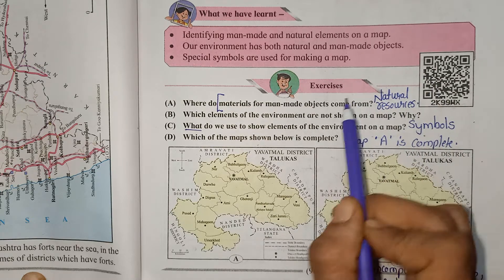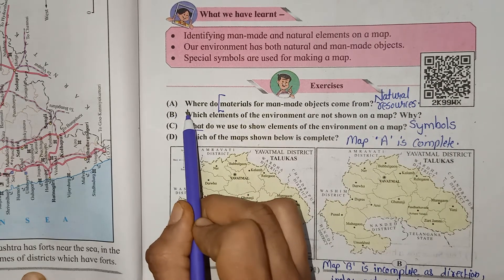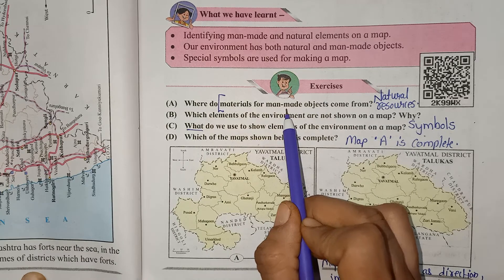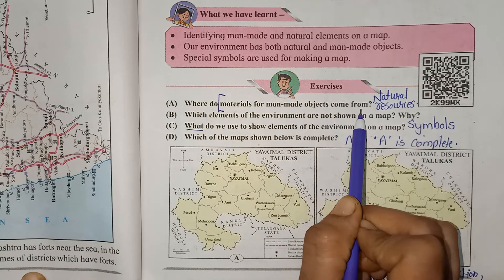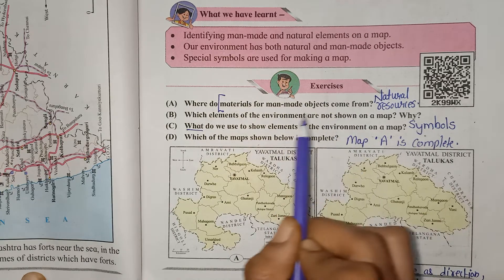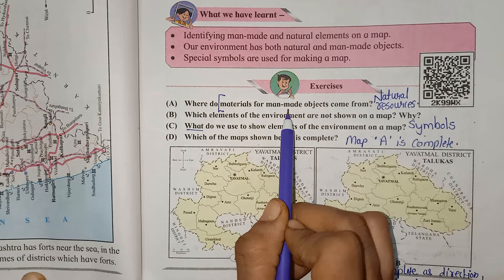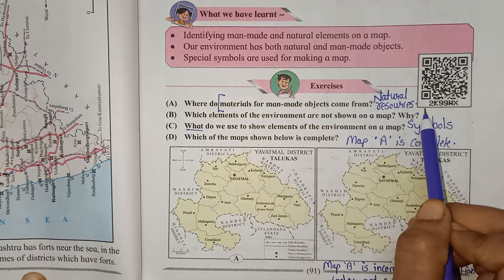Now we will see exercise question A: Where do materials for man-made objects come from? The right answer is: materials for man-made objects come from natural resources.